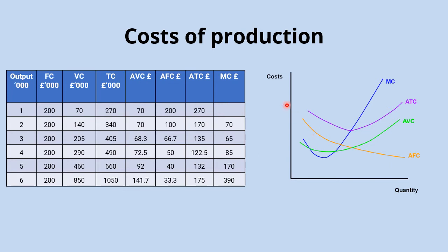We have cost on the y-axis and quantity of output on the x-axis. If we were to graph fixed costs, variable costs, and total costs, we would find fixed costs would be a horizontal line, variable costs would slope upwards starting from the origin, and total costs would slope upwards as well, parallel to that variable cost line but starting at the point where the fixed cost line meets the y-axis.